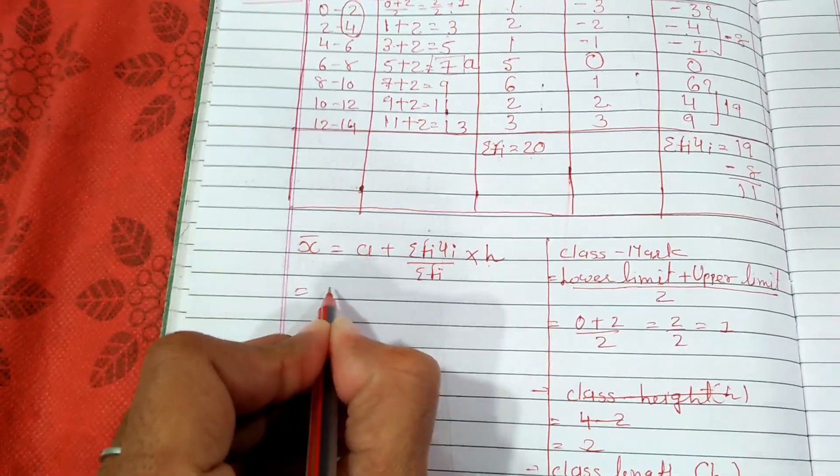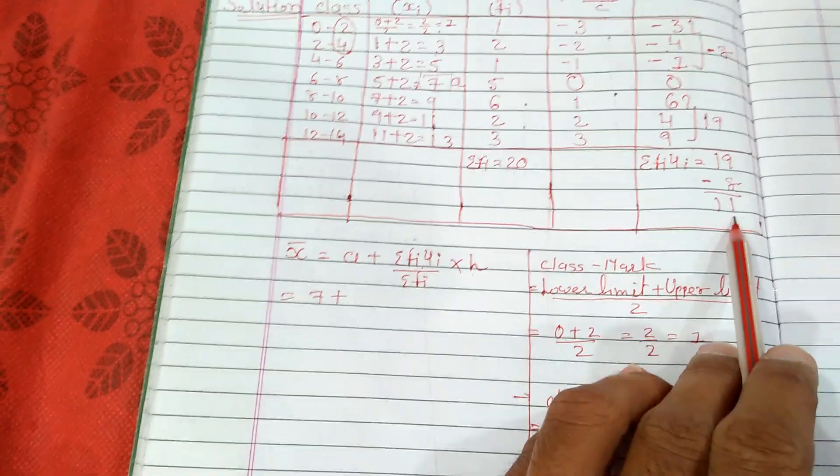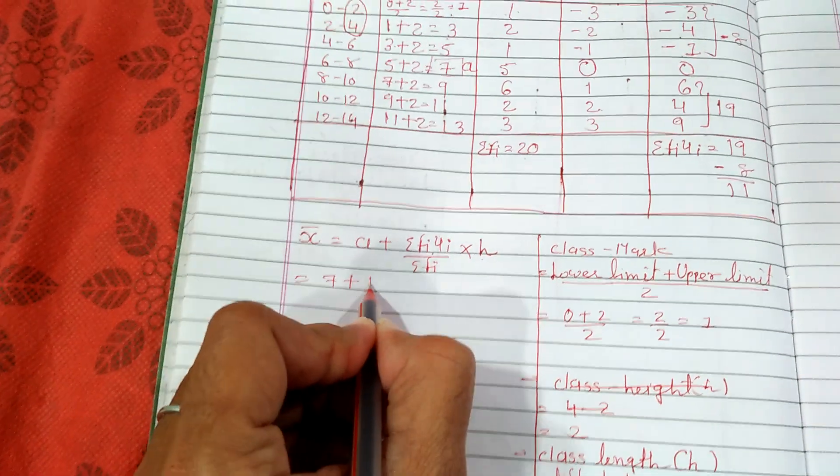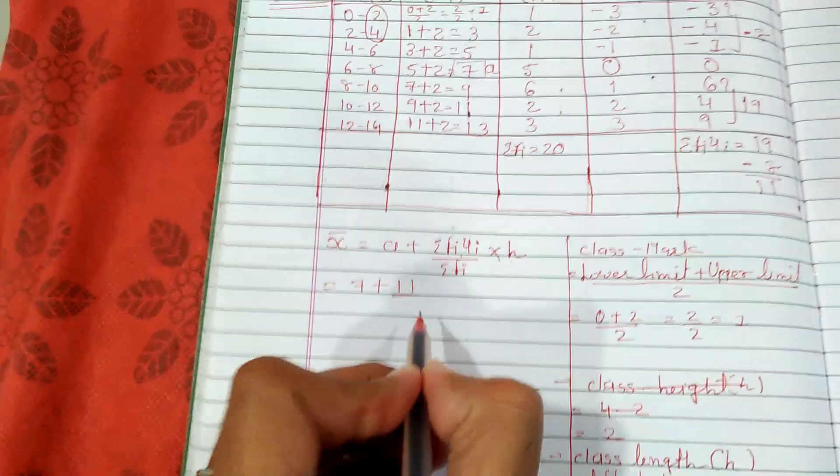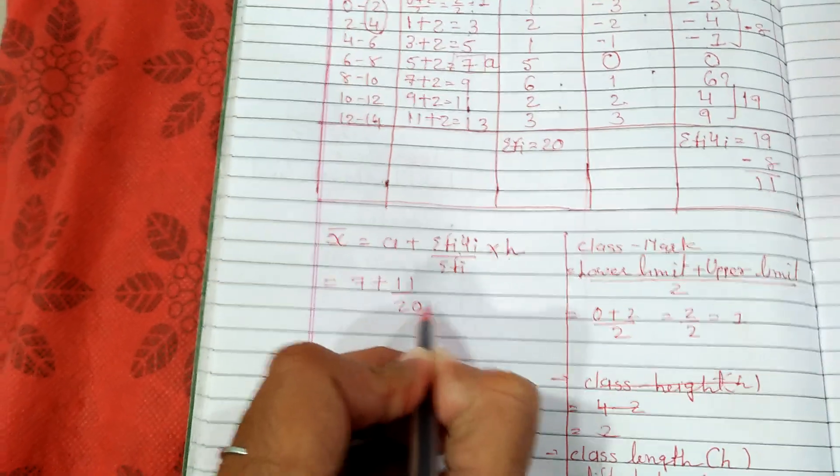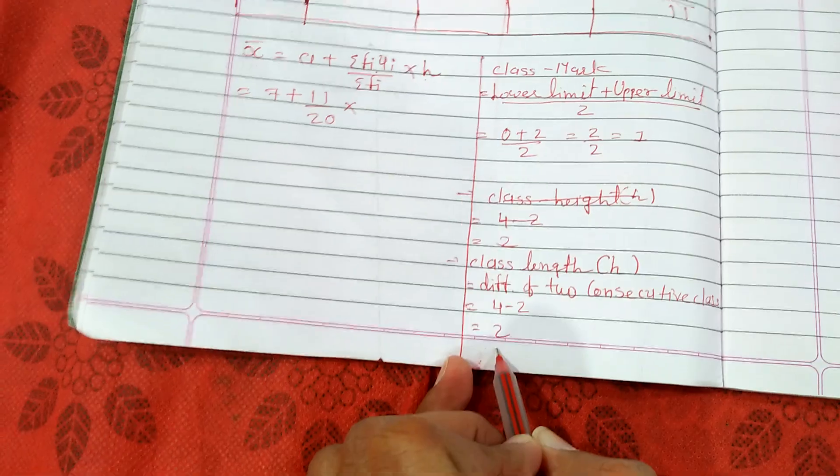Here we have a equals 7, plus Sigma Fi ui equals 11, upon Sigma Fi, that means sum of frequencies which is 20, and H, that is 2.